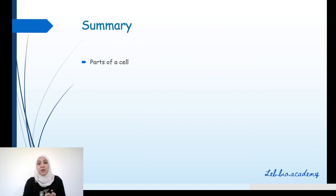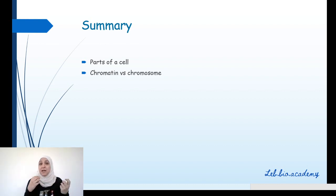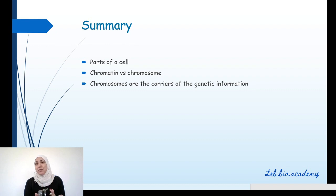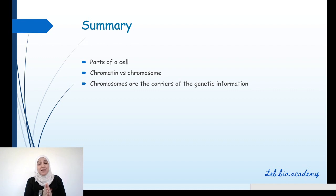Let's sum up. You have to know the main parts of a cell: the cell membrane, the cytoplasm, and the nucleus. You have to know the difference between chromatin and chromosome — chromatin is found in a non-dividing cell, while chromosomes are found in a dividing cell, inside the nucleus. Most importantly, chromosomes are the carriers of genetic information. Genetic information is a character or trait that can be transmitted from parents to offspring.